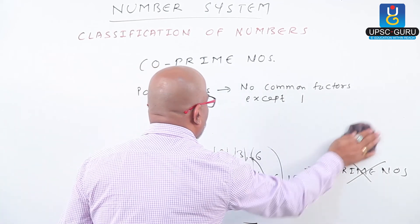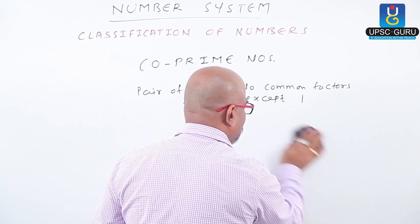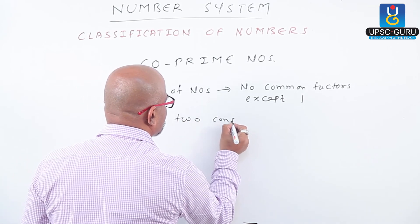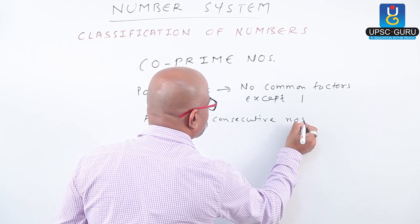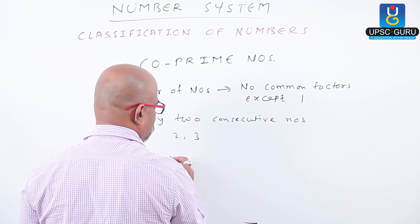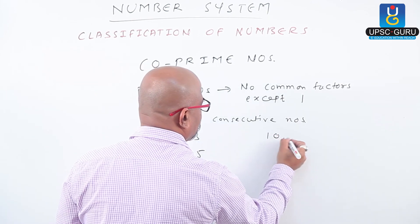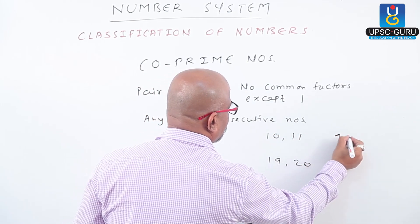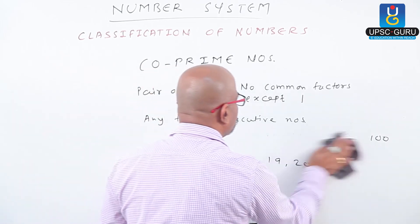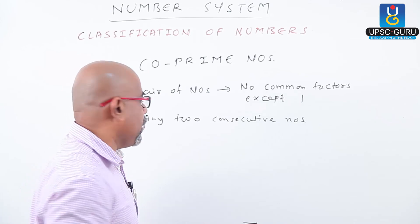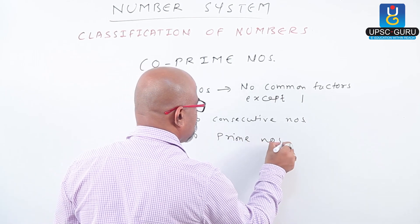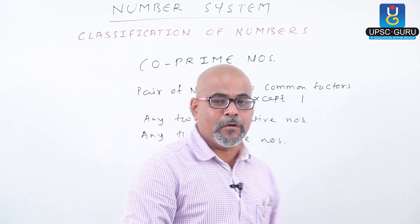Co-prime numbers means having no common factors other than 1. If we check any 2 consecutive numbers — that means numbers which come one after another — they are always co-prime numbers. For example: 2 and 3, 4 and 5, 10 and 11, 19 and 20, 99 and 100 — all these are pairs of co-prime numbers. Any 2 consecutive numbers are co-prime numbers. Also, any 2 prime numbers are always co-prime numbers.